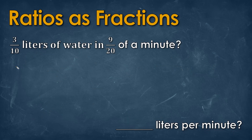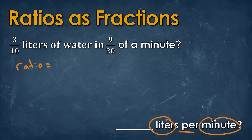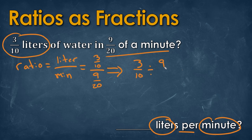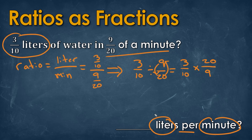Now let's try this one. Our ratio wants it in liters per minute. We have three tenths of a liter on top, divided by nine over twenty for the minutes. So we have three over ten divided by nine over twenty. We change division to multiplication and take the reciprocal of nine over twenty, flipping it to twenty over nine. We can cross-simplify: three and nine simplify — nine divided by three is three; twenty and ten simplify — twenty divided by ten is two. So we have two over three. Our answer is two thirds liters per minute.